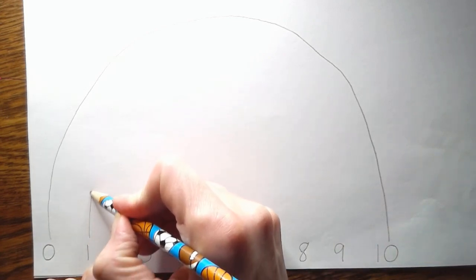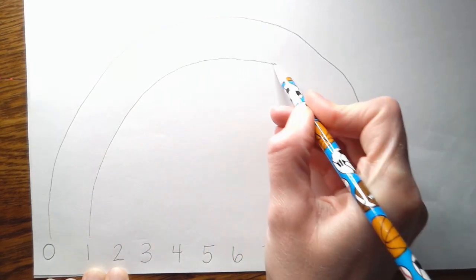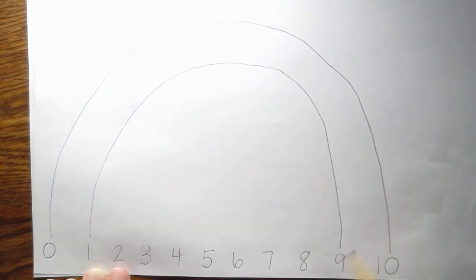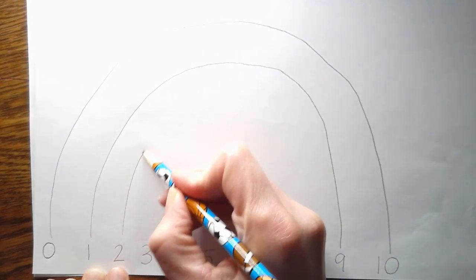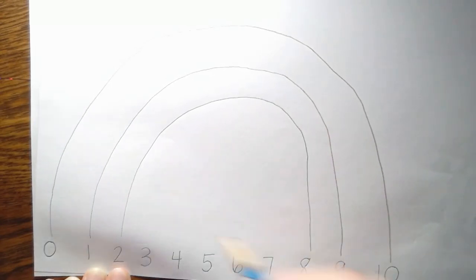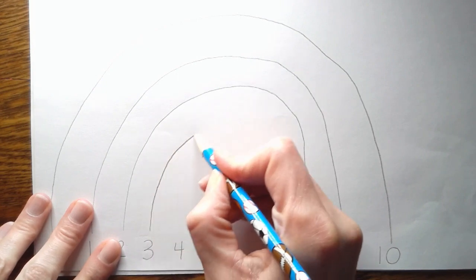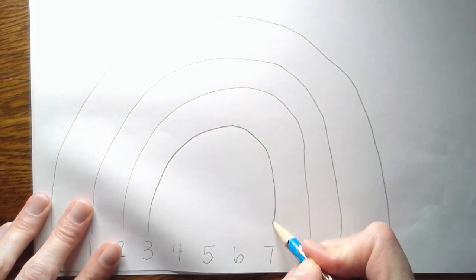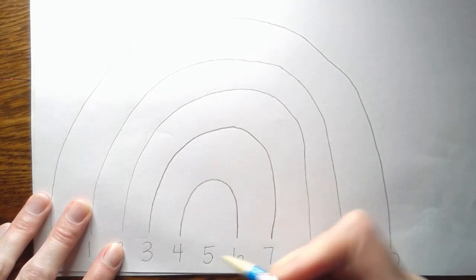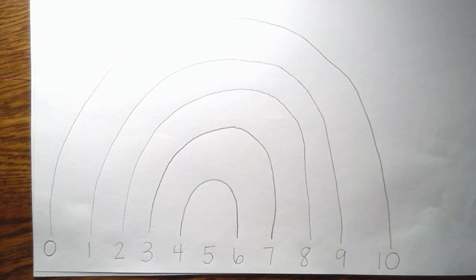I'm going to start here, go from 1 all the way over to number 9. Here we go. We're going to do 2 all the way to 8. We're going to go from 3 all the way to 7, 4 all the way to 6. And I'm going to wait on number 5 because I am going to use my crayons to help me with that one.